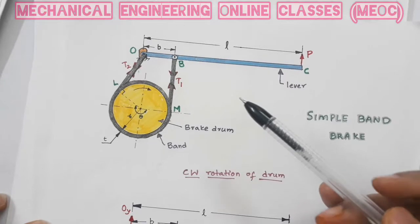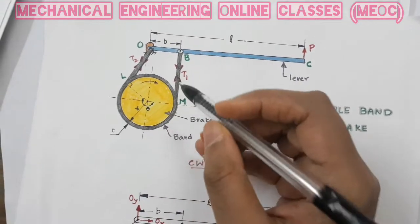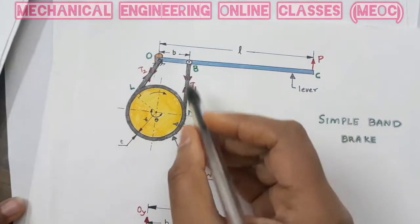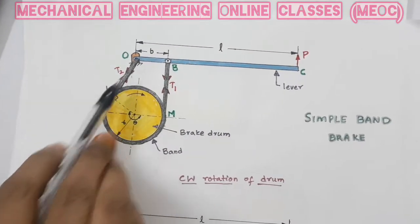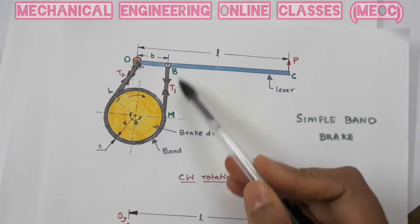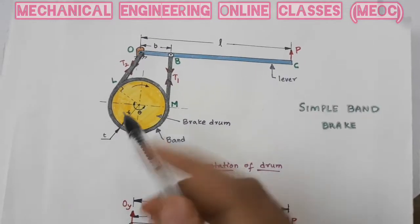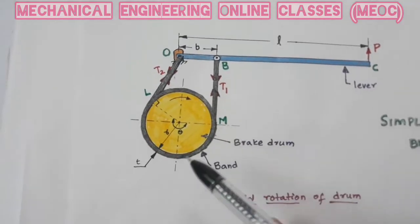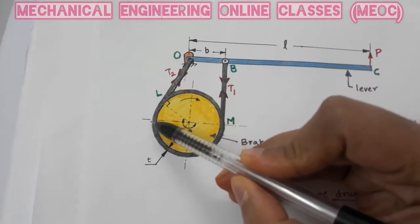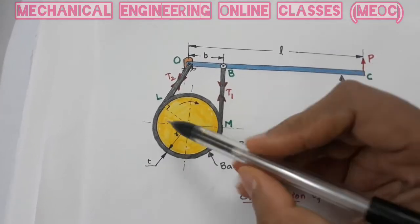Which side is tight and which is slack must be determined first. Because the wheel is rotating in clockwise direction, at this particular location as the wheel rotates, this particular side of the band will be pulled. That is the reason this side is called the tight side and the other side will be the slack side. The angle of contact between the band and the drum, from this point along the circumference to this point, is the angle of contact or angle of lap, which is theta.